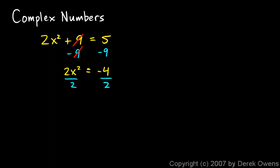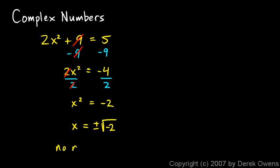Then I divide by 2 on each side; the 2's cancel and I'm left with x squared equals negative 2. To get x completely isolated, I need to take the square root of both sides. The square root of x squared is just x, and on the right I get plus or minus — don't forget the plus or minus — the square root of negative 2. At this point you might think: that's the problem. We can't have negative numbers under the radical. In Algebra 1 classes, we typically say there's no real solution.